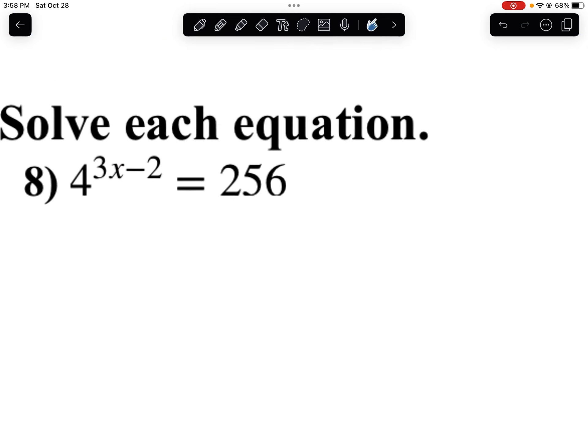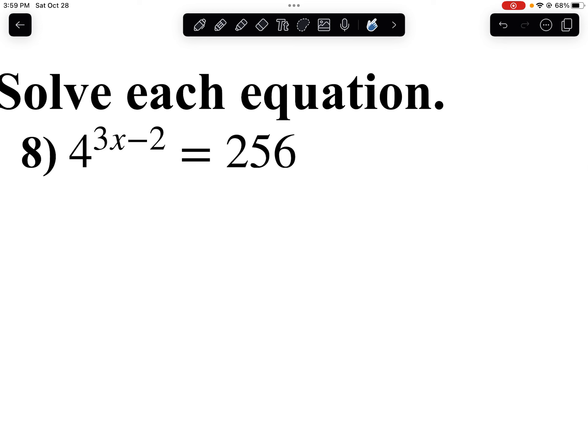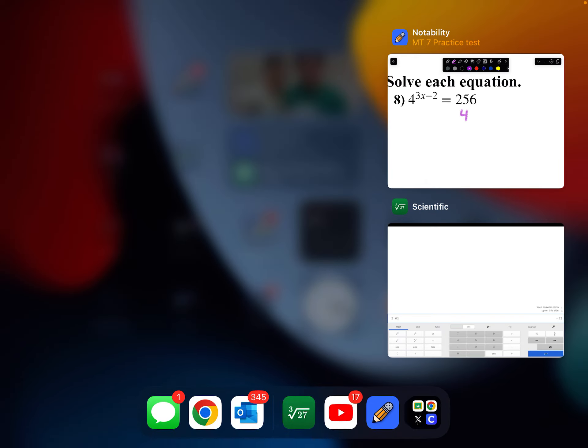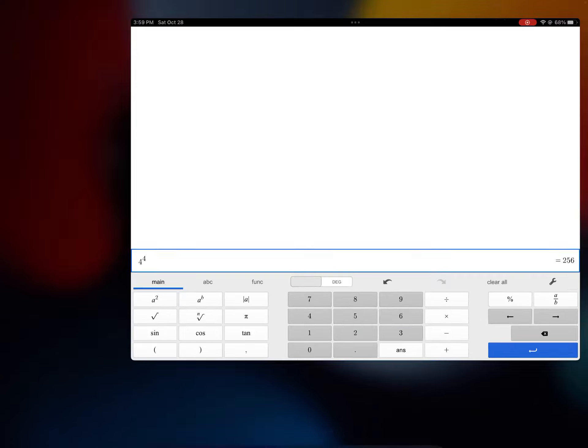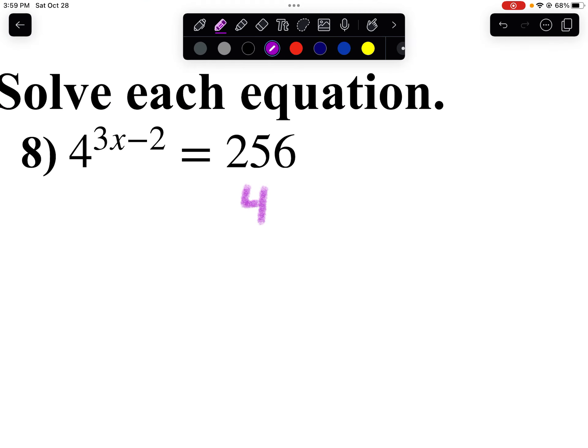Now when you're solving exponential equations, remember we need to have the same base. I always take the bigger one and write it in terms of the smaller one. So can I write 256 as a power of 4? Well, let's do some guessing and checking here. If I take 4 to the 4th power, I know 4 to the 3rd is 64. Oh, notice I get 256. So then I'm going to get 4 to the 4th power equals 4 to the 3x minus 2. Since I have the same base, that means my exponents are going to be the same.